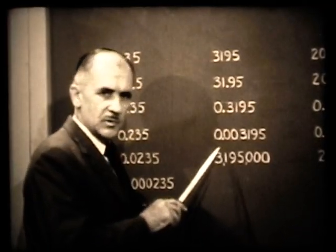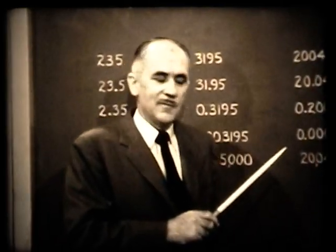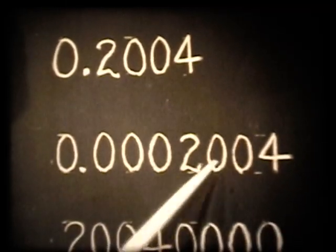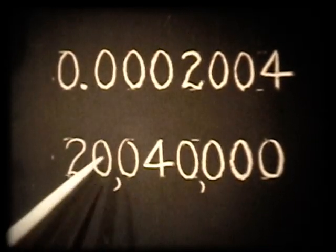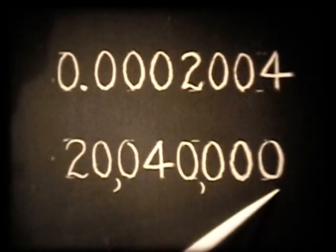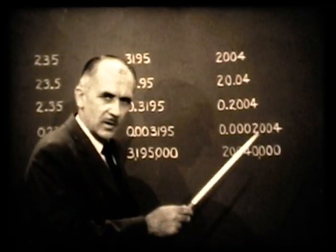Now, suppose the zeros were between two numbers instead of the right or left — that's a different story. Here's 2004: the zeros are between the two numbers. The 4 is significant because one was able to measure and determine that number. We might read 20.04 as a measurement, or .2004. Here the zeros are significant. In 20,040,000, these first four figures are significant, but the trailing zeros are not. Usually if zeros are in front or behind, they are not significant figures.